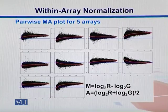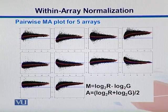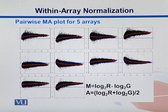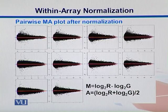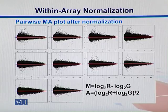Here are MA plots for five arrays. Before normalization, we see that most data points are away from the zero line. After normalization, the MA plots look much better, with the distributions centered around the zero lines.